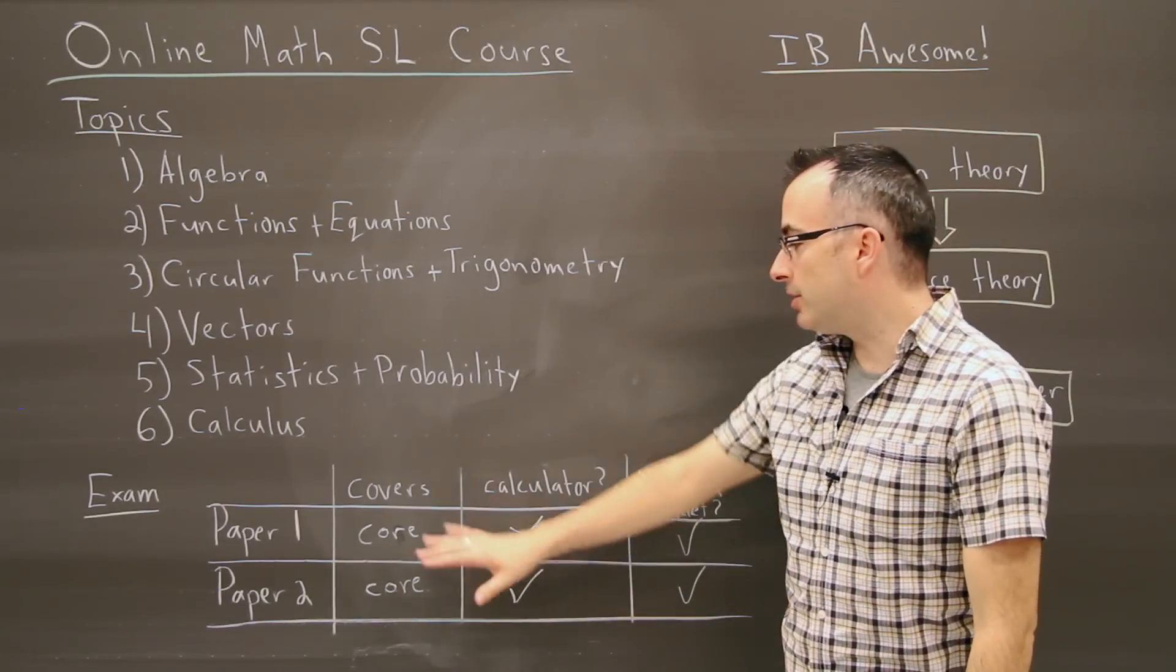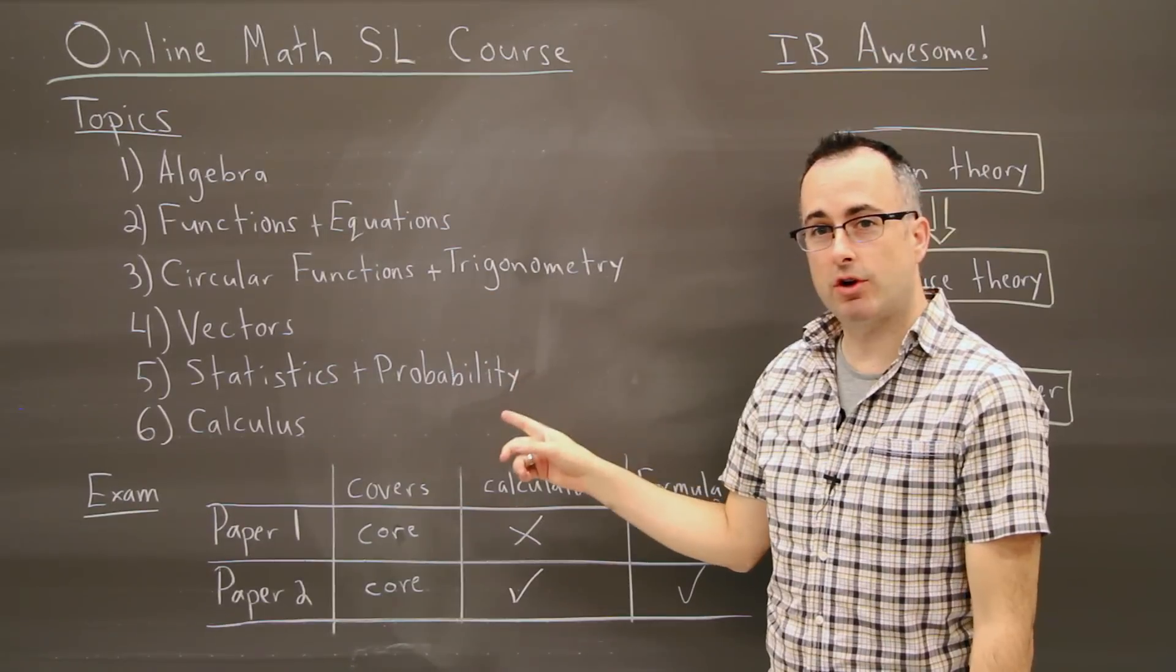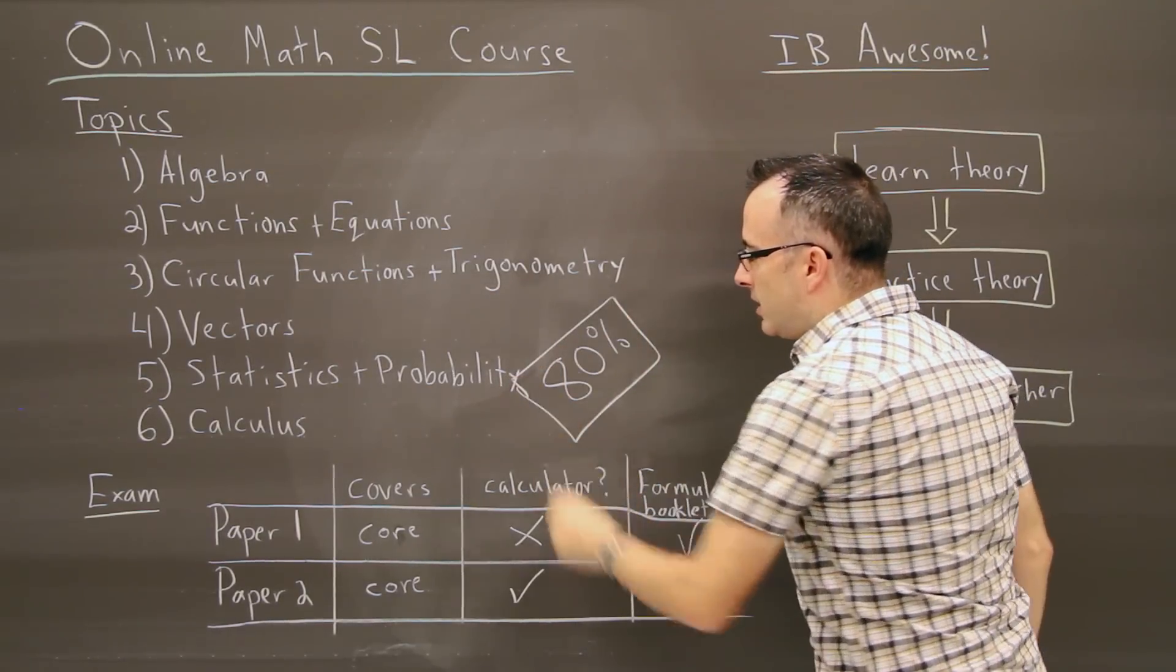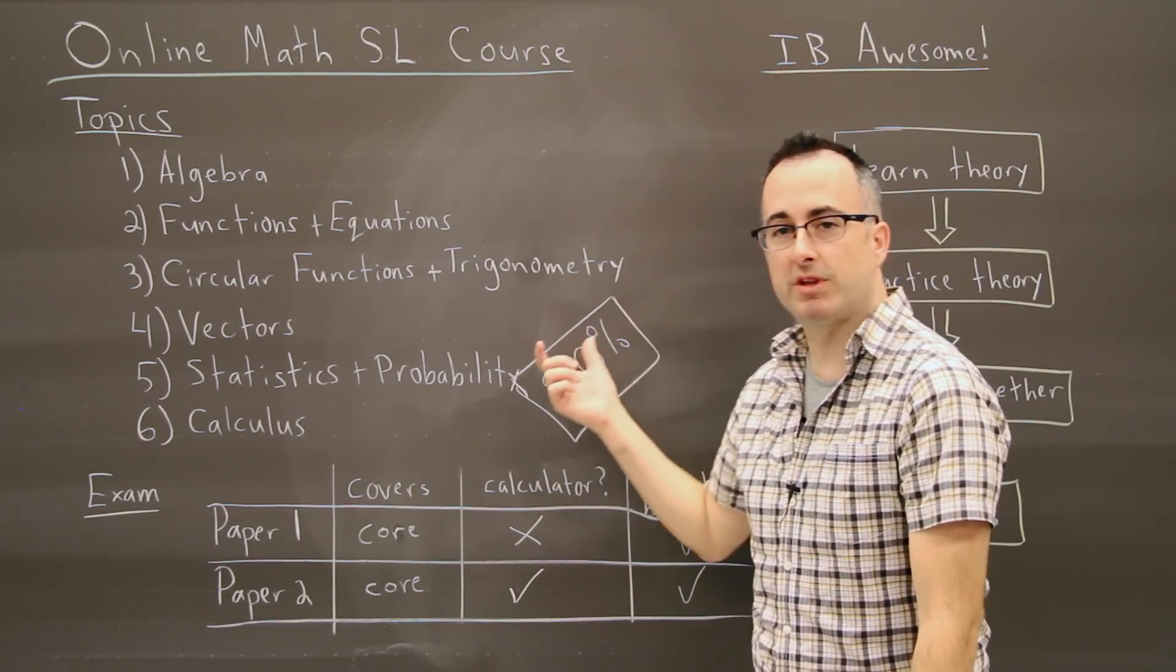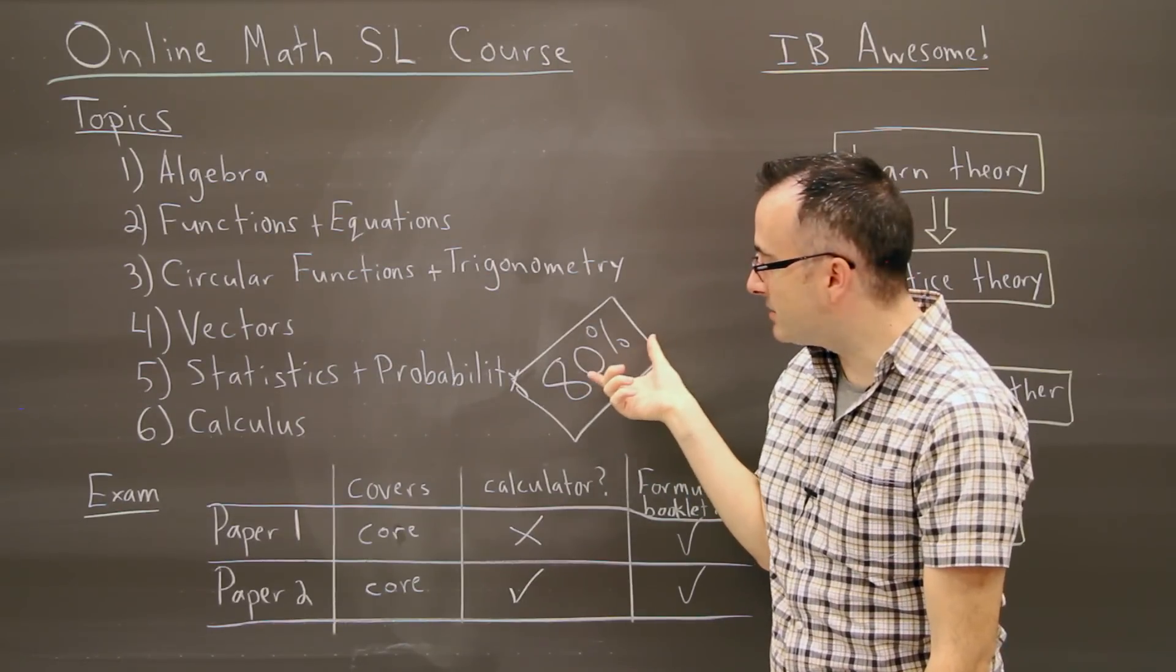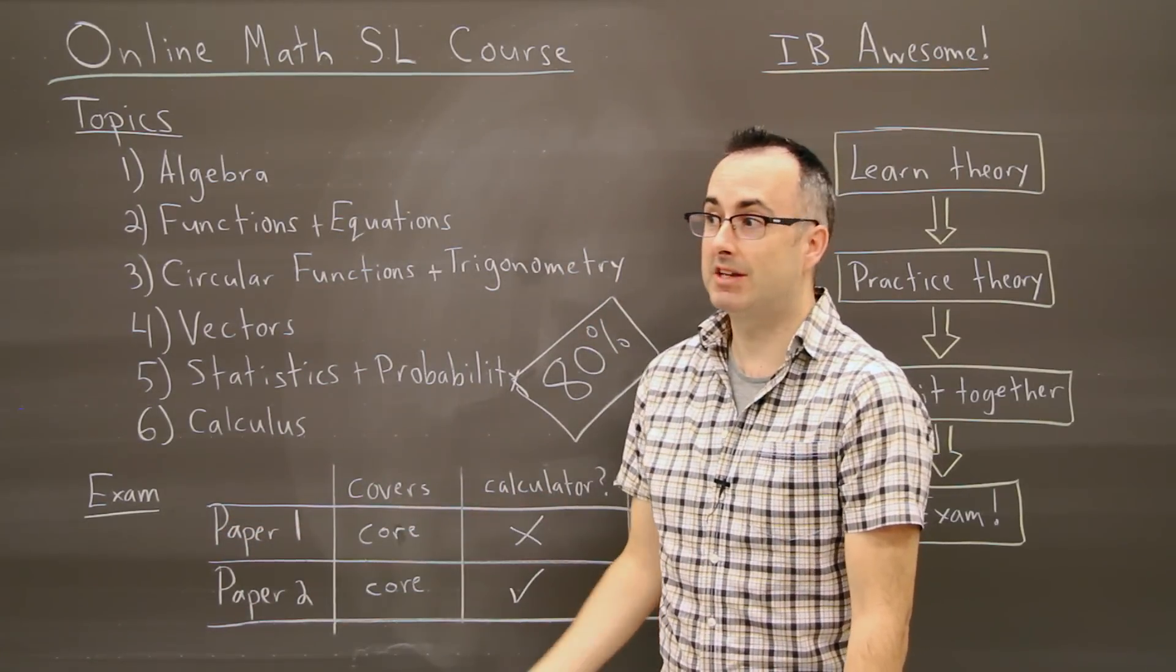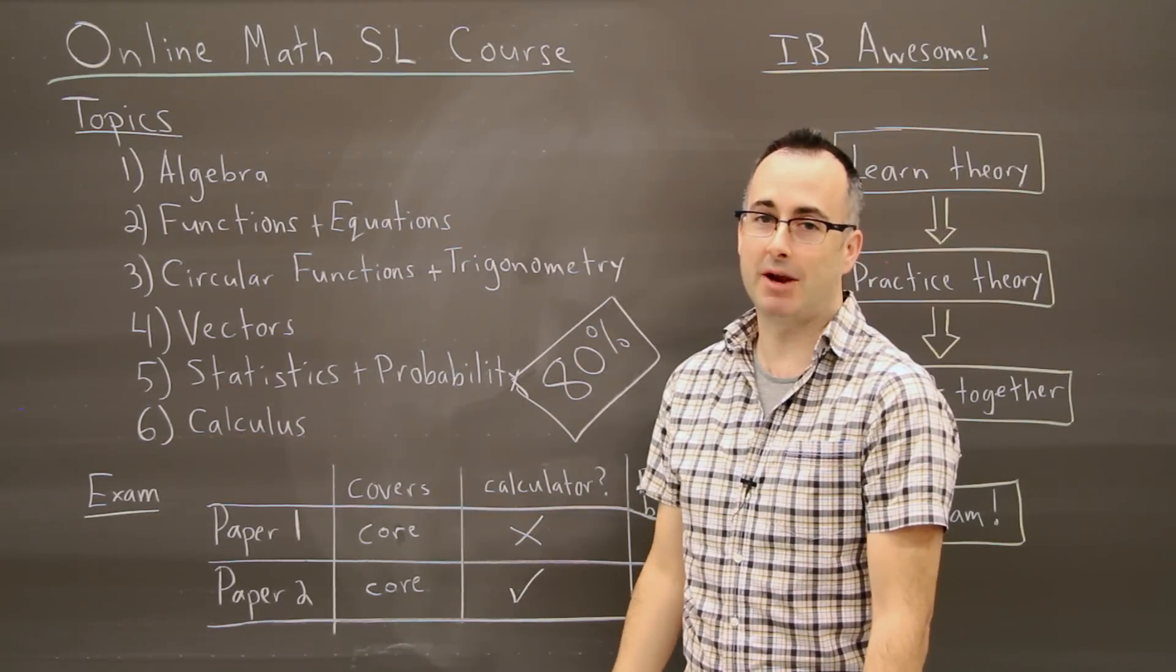So we've talked about what the exam actually covers. Do you know how much the exam is worth? Out of the entire two-year course, the exam is actually worth 80% of your final grade. This is huge. The other 20% is made up of something called your internal assessment. This exam is 80% of your entire grade from the last two years, and it's actually 40% paper one, 40% paper two. So it's pretty straightforward, but I understand why a lot of people are freaked out about this. That's my job. That's why I'm here to help you get ready.